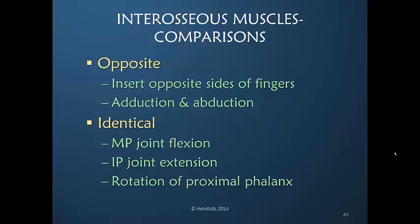In addition, both the volar and dorsal interosseous muscles provide the ability to rotate the proximal phalanx — one would rotate it in one direction and the other in the other direction.